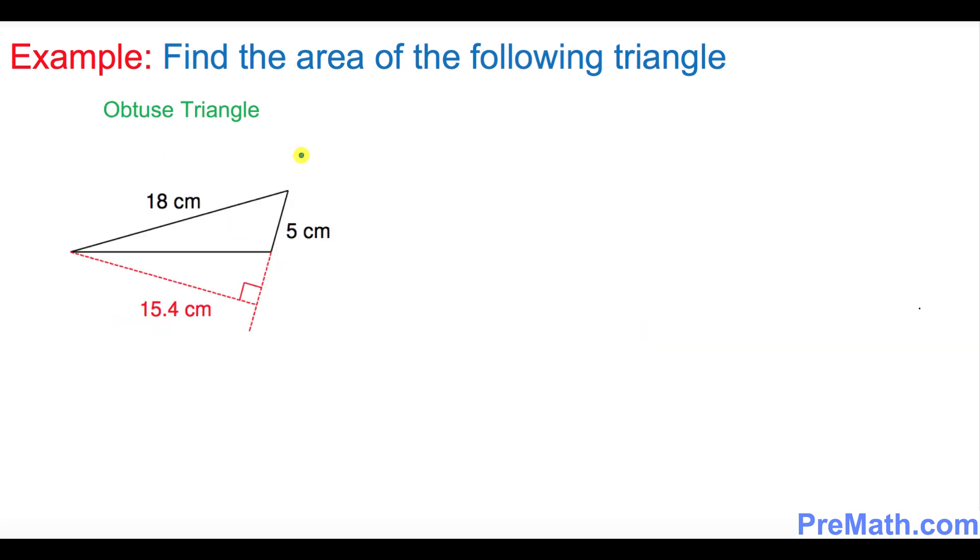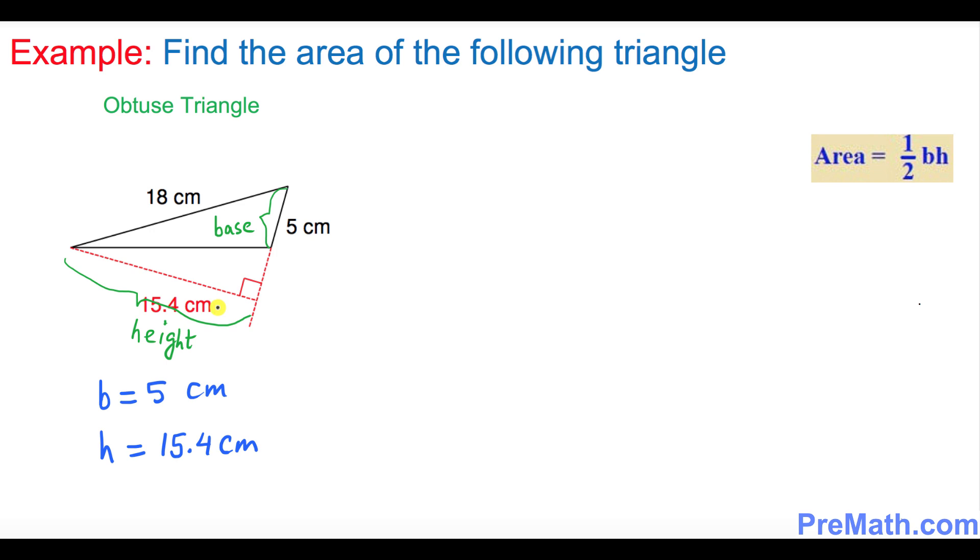Finally, in this example we're gonna find the area of this obtuse triangle, where one of the angles is more than 90 degrees. In this case, this height makes a 90-degree angle—that is our height—and this 5 centimeters is our base. Let's put down the formula, which is a half times base times height.